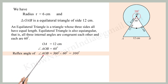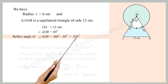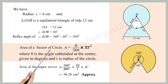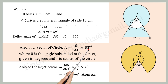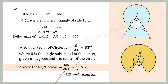The reflex angle of AOB equals 360 degrees minus 60 degrees, which equals 300 degrees. We know that the area of a sector of a circle is A = (θ/360) × πr², where θ is the angle subtended at the center in degrees and r is the radius. Area of the major sector equals (300/360) × (22/7) × 6² ≈ 94.28 cm².